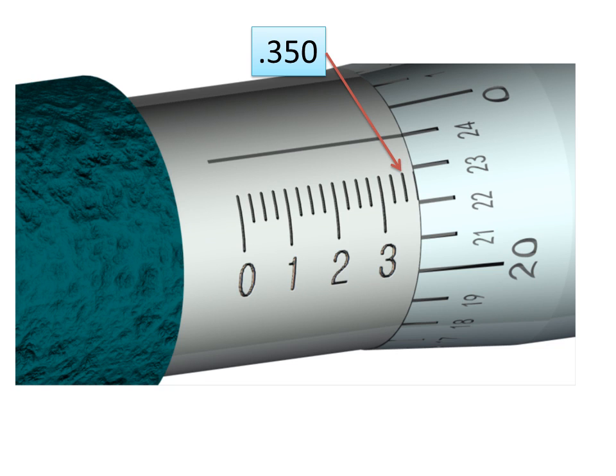Now we can get the next decimal place by reading the thimble scale. This one, remember, is reading in thousandths of an inch. So this is twenty thousandths, twenty-one, twenty-two, twenty-three—this is twenty-four thousandths, so that's 0.024.